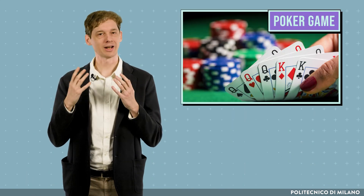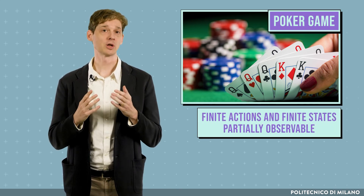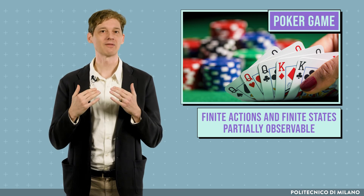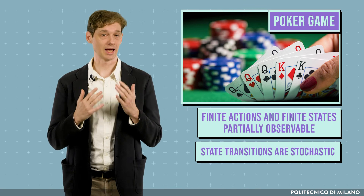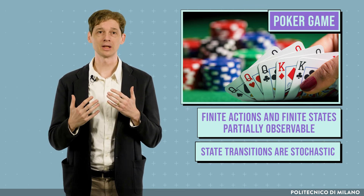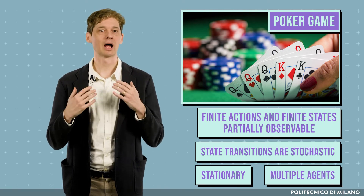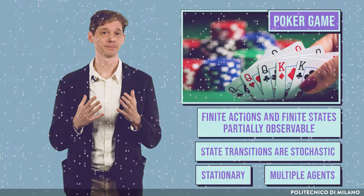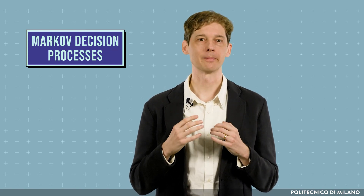If we consider a poker game instead, we have finite actions and states which are partially observable, as we cannot observe the private cards of our opponents. The state transitions are stochastic, as cards are drawn randomly from the deck. The problem is stationary, and it presents multiple agents that are concurrently learning. In the next lesson, we will analyze Markov decision processes and discuss how they can be used to formalize sequential decision-making problems and how it is possible to solve them.